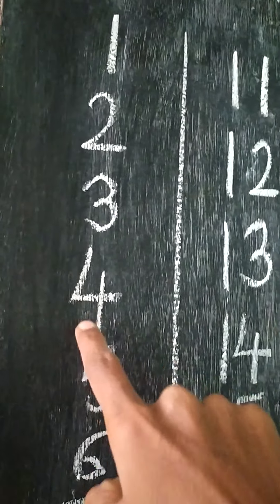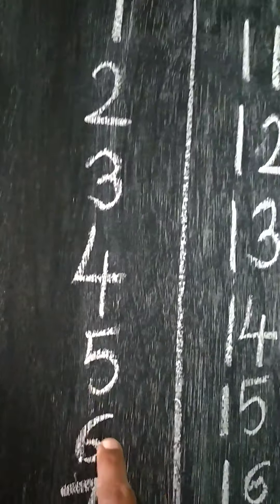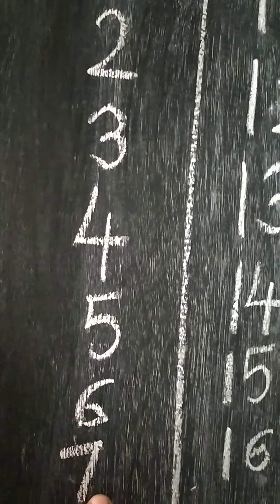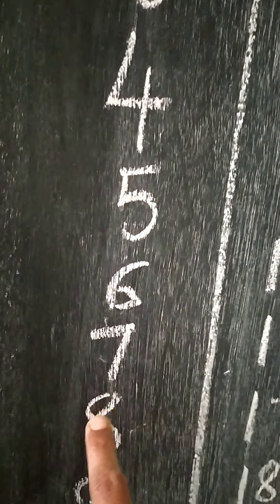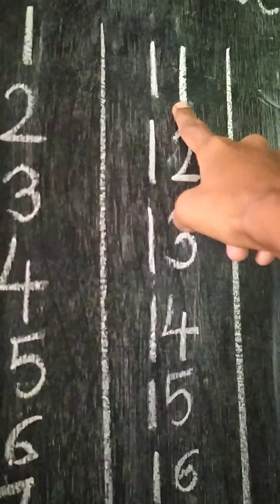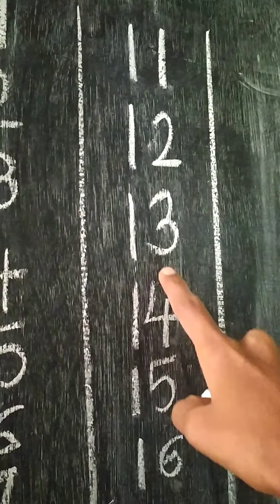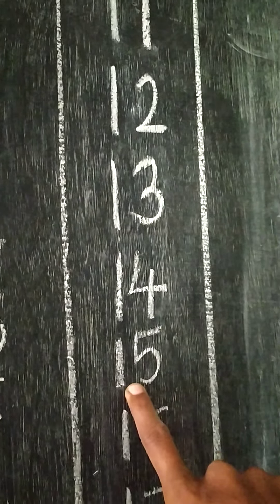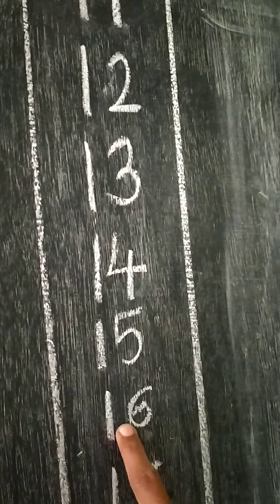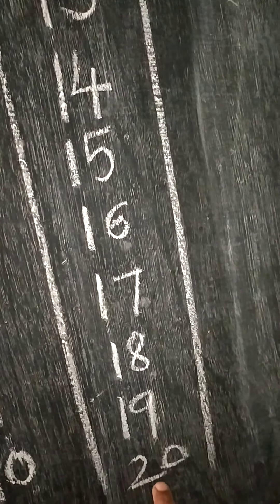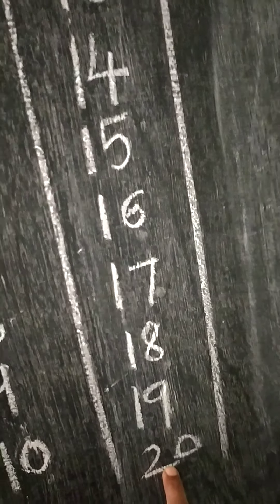Four, five, six, seven, eight, nine, ten. Now say 11, 12, 13, 14, 15, 16, 17, 18, 19, 20.